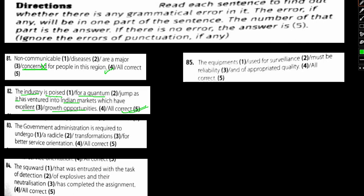Let's move to 83. The government administration is required to undergo. Administration, government administration singular, yes all correct. And radical - here the spelling, it should be radical, R-A-D-I-C-A-L. This is radical, that is drastic. So option 2, this error is a spelling error.